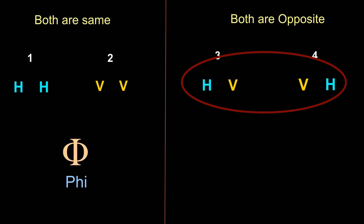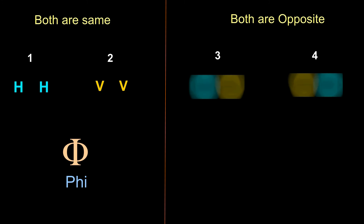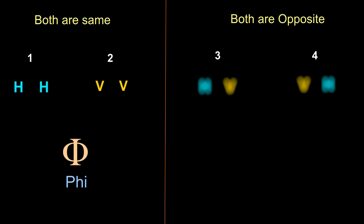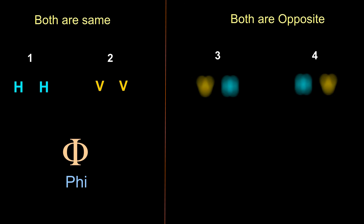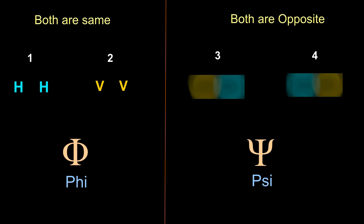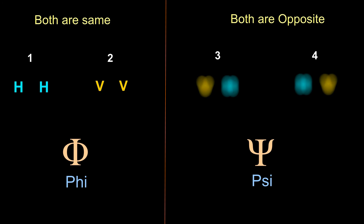The state where both photons are different is a really interesting one. The entangled photons flip-flop their state all the time and only come to a definite state with opposite polarization to each other after the measurement. This waving state is denoted by the Greek letter psi.